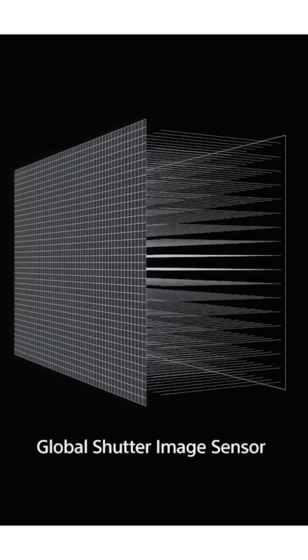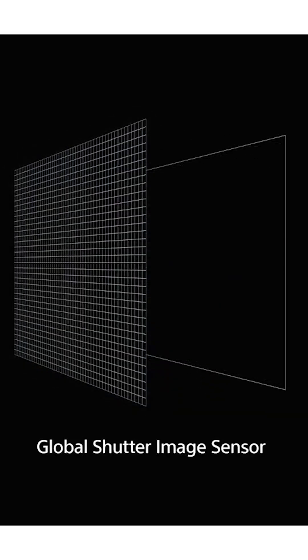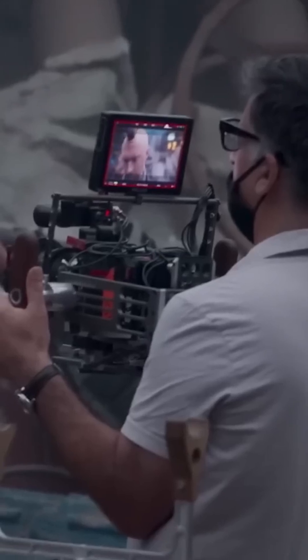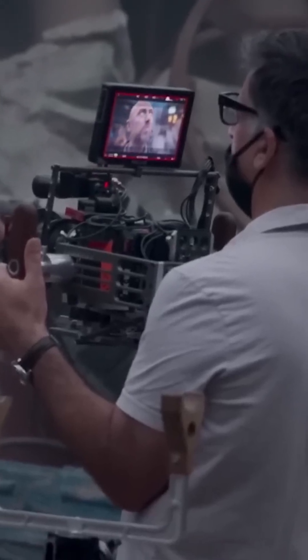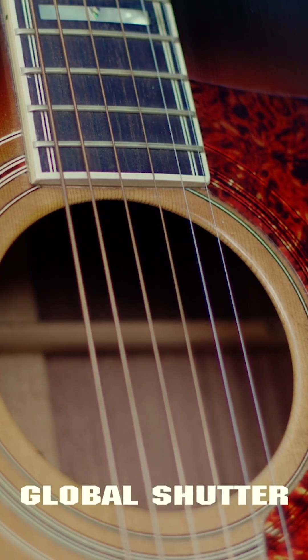Global shutter, on the other hand, captures the entire image at once. Every pixel on the sensor is exposed to light simultaneously. This quality is especially important for action scenes, VFX work, and any situation where a clean moving image is necessary.